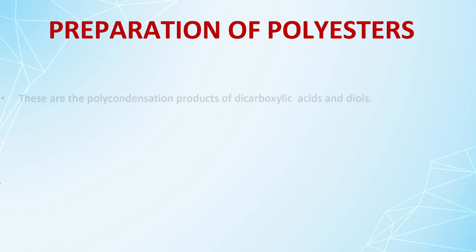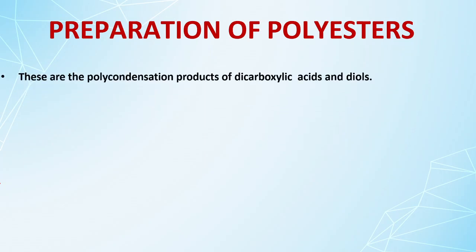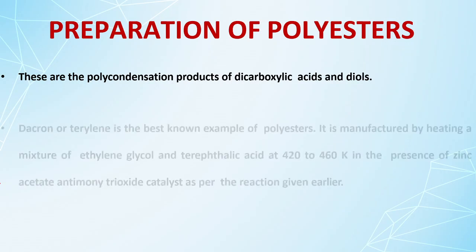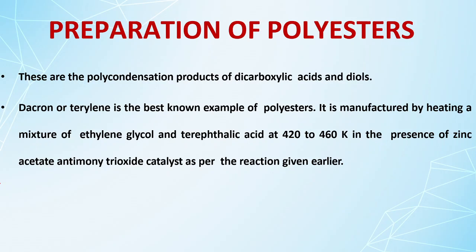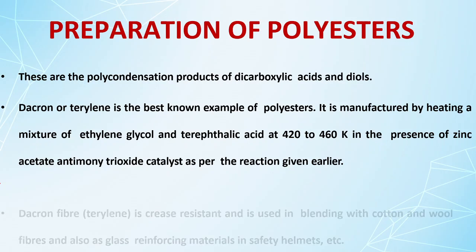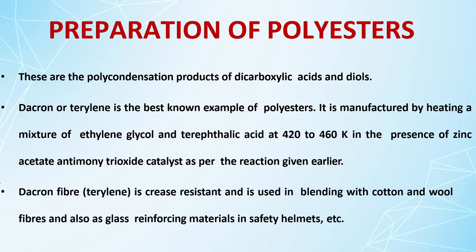Polyesters like Dacron and Terylene are formed by condensation of bifunctional groups in the presence of zinc. They are crease-resistant and are used in cotton and wool fiber blends and as reinforcement material in safety helmets.